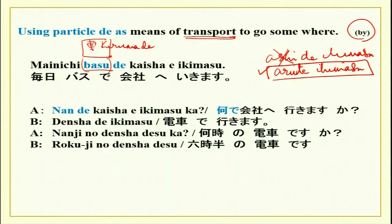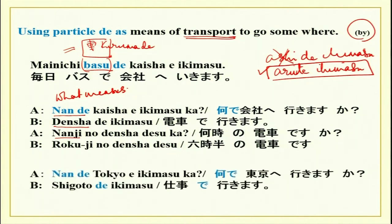Here is a small conversation: Nande kaisha e ikimasu ka? — By what do you go to the office? Densha de ikimasu. Nanji no densha desu ka? Rokuji no densha desu. There is another sentence with nande: nande to kyo e ikimasu ka? The answer here is not by means but purpose — shigoto de ikimasu.